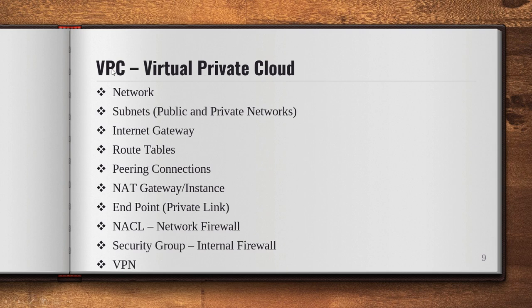Virtual Private Cloud is called VPC. In VPC we create different types of networks and connectivity. Subnet is like an availability zone — different subnets connected with different networks. Topics covered include: Internet Gateway, Route Table, Peering Connection, NAT Gateway, Endpoint, NACL, Security Groups, and VPN. We will learn all about VPC in large dedicated sessions.